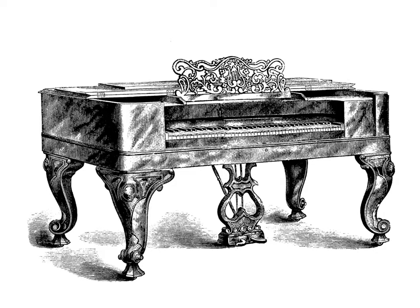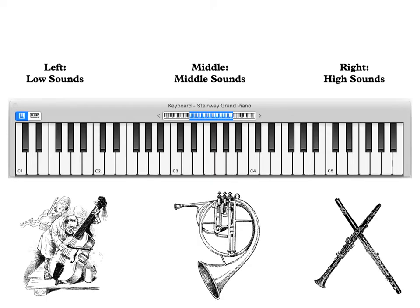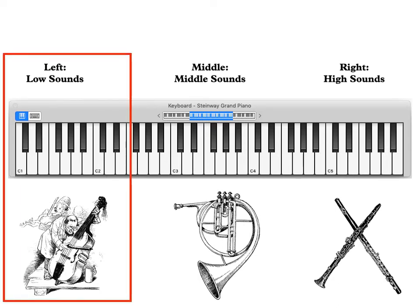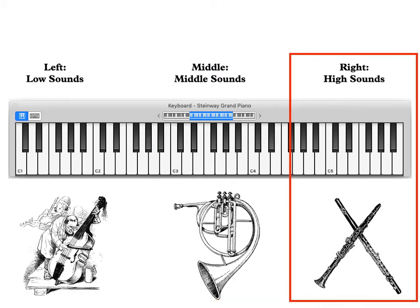We're going to use a piano keyboard as our visual aid, because we can see lots of notes all at one time. It doesn't matter what instrument you play — you're going to have high sounds, mid-range sounds, and low sounds. On the left side of the keyboard we're going to have low sounds, in the middle mid-range sounds, and on the right side high sounds.